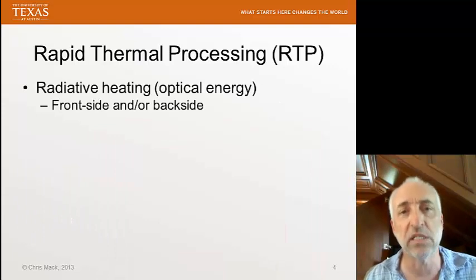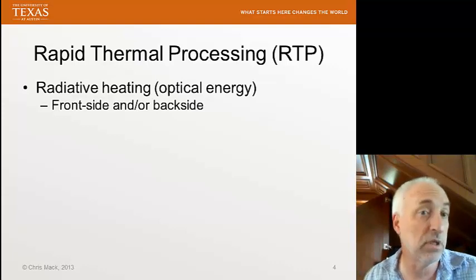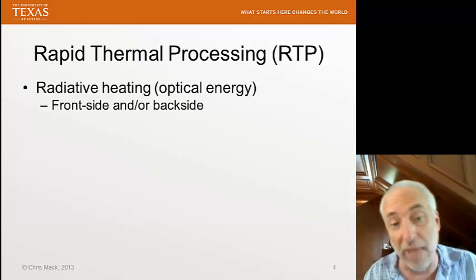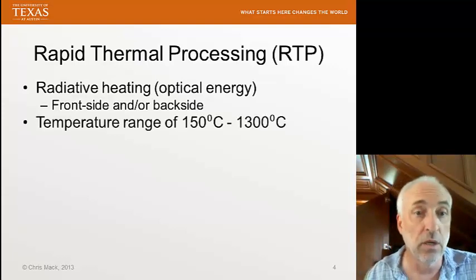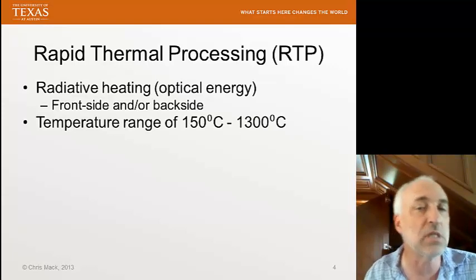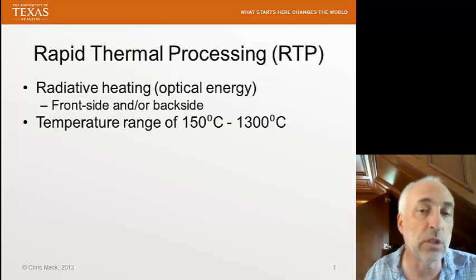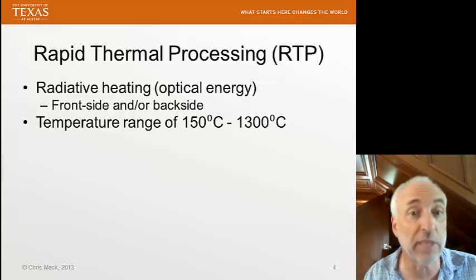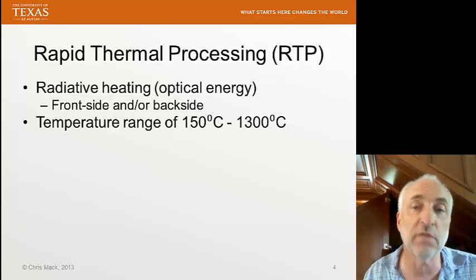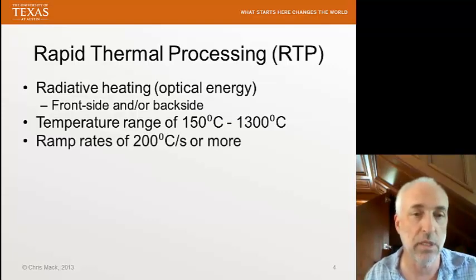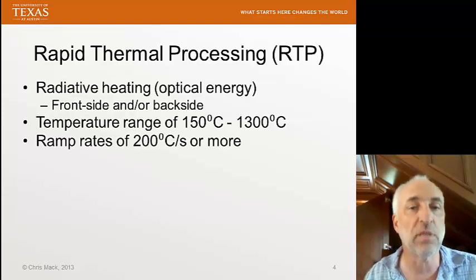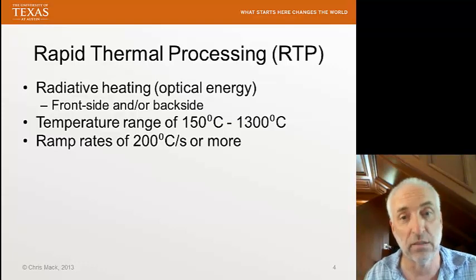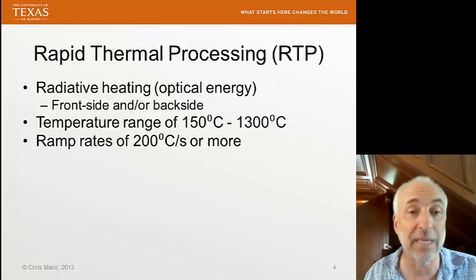Let's think about all the pieces of a rapid thermal processing system. First, we're doing radiative heating — optical energy. We can supply the optical energy on the front side or on the back side, or both. These systems work over a range of temperatures from 150 to 1,300 degrees centigrade. Ramp rates today can exceed 200 degrees centigrade per second — imagine going up to 1,000 degrees in just five seconds.